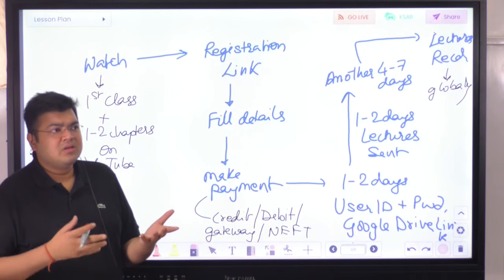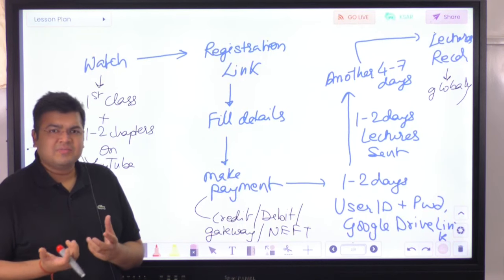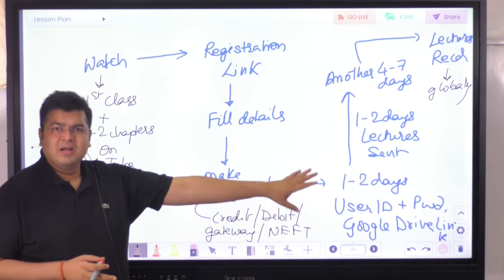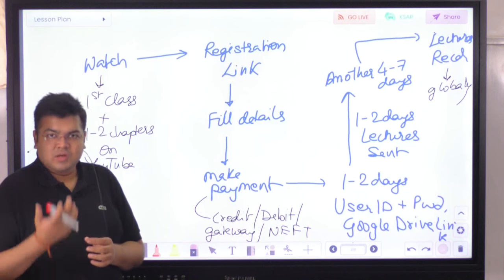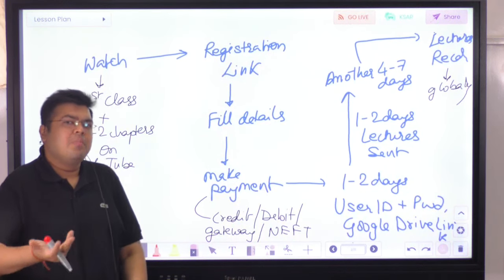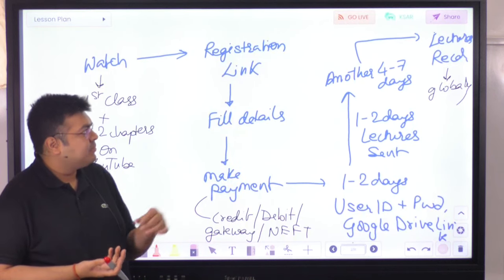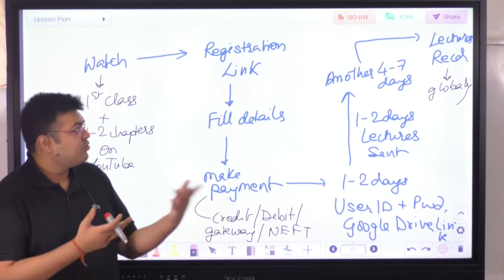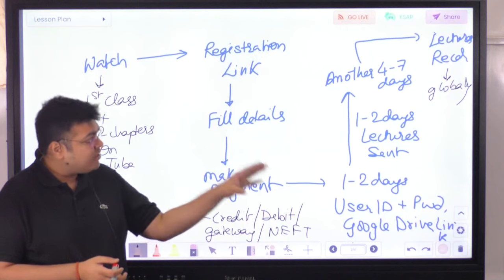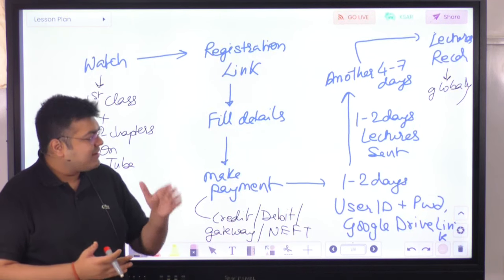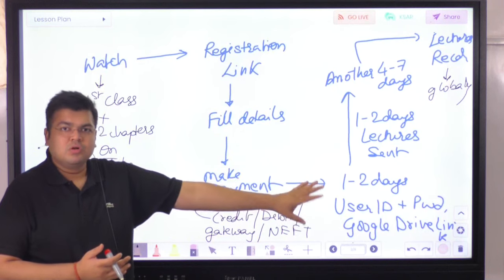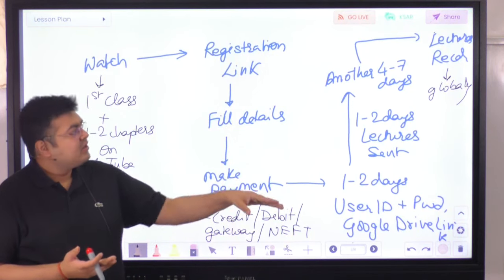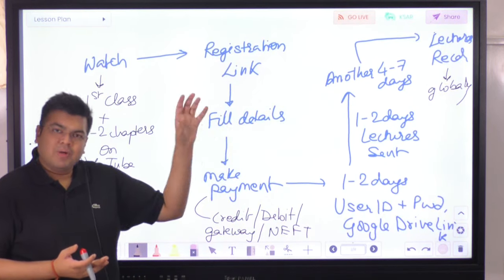Within India, delivery typically takes four to six days, up to seven. We provide the courier details and tracking ID. For international students, depending on the country, it normally takes about seven days to reach your destination. We provide the Google Drive link early so you can start studying within a day or two without waiting for the pen drive. Once the pen drive arrives, you no longer need to download anything.